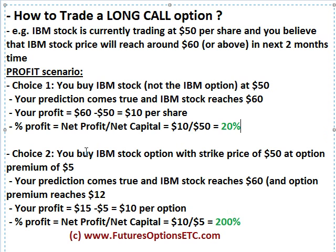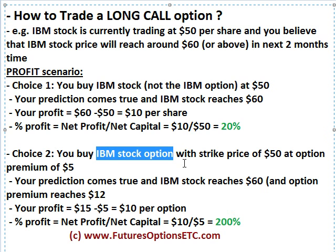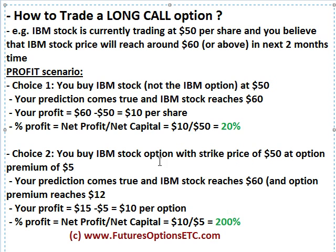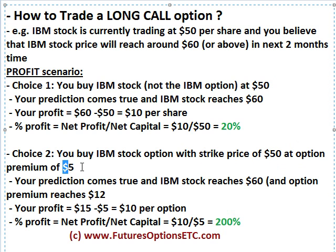Then we have choice two, where instead of buying the IBM stock you actually buy the IBM stock option — a long call option, whatever name you are comfortable with. This option you buy with a strike price of $50. But this is not the actual price that you pay; this is just the theoretical strike price of the option. The actual price that you pay for buying this option is $5 — that's called the option premium. So this is your net capital invested.